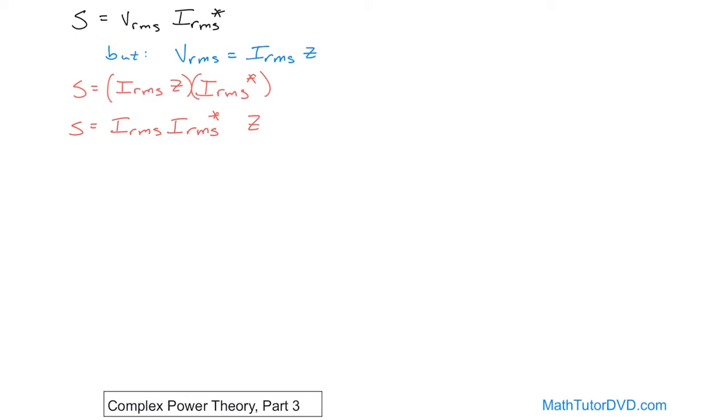So at the end of the day, the complex power is going to be I_RMS times I_RMS conjugate times Z. Now, how do we simplify this further? You have a complex number or a phasor called I_RMS, and you're multiplying by the same exact thing but the conjugate form of it. How do you simplify that?